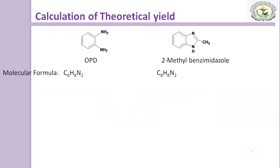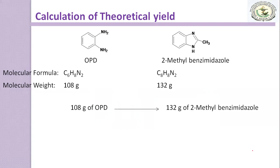And for 2-methylbenzimidazole is C8H8N2. And the molecular weight. With this, you have to calculate the theoretical yield. So, 108 grams of OPD gives 132 grams of 2-methylbenzimidazole.